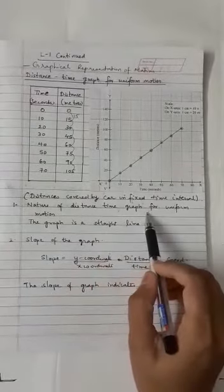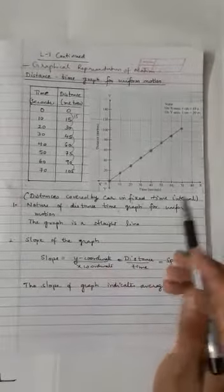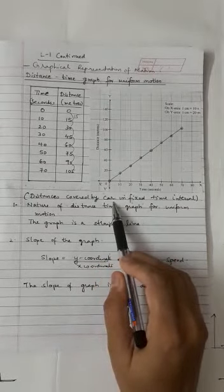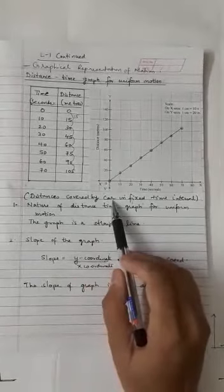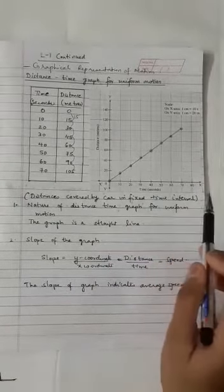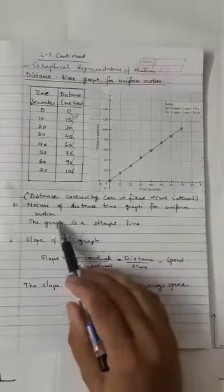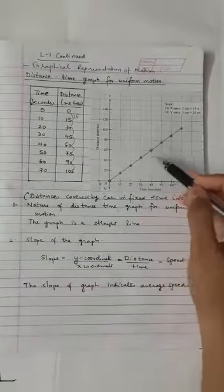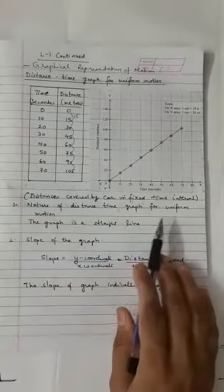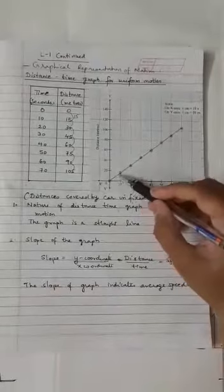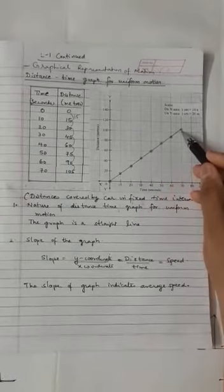The nature of the distance-time graph for uniform motion — the car is performing uniform motion. The distance covered by the car in fixed time intervals is also equal. Once we join the points, how does the graph look? That is the meaning of nature. The nature of the distance-time graph for uniform motion is a straight line, as you can see when we join these points.